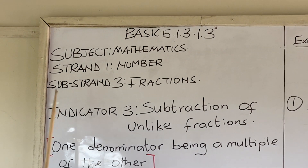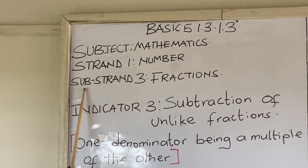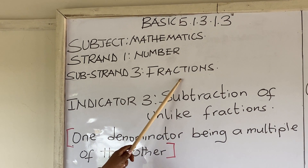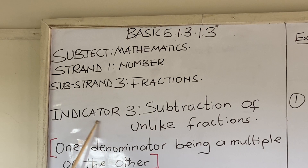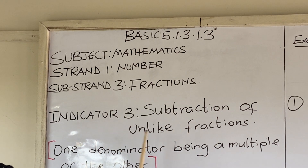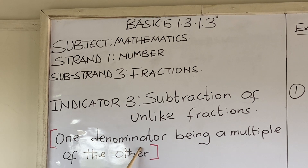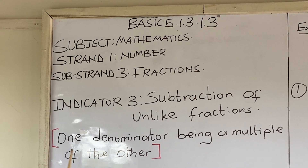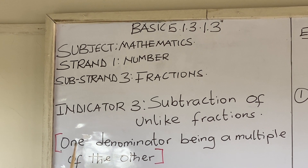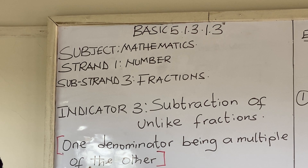Taking from strand 1, number, substrand 3, fractions, indicator 3: subtraction of unlike fractions, one denominator being a multiple of the other.